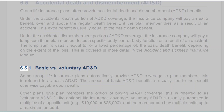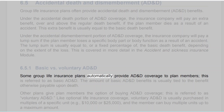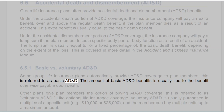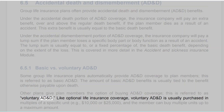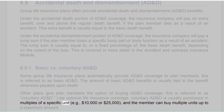6.5.1 Basic versus Voluntary AD&D. Some group life insurance plans automatically provide AD&D coverage to plan members — this is referred to as basic AD&D. The amount of basic AD&D benefits is usually tied to the benefit otherwise payable upon death. Other plans give plan members the option of buying AD&D coverage — this is referred to as voluntary AD&D. Like optional life insurance coverage, voluntary AD&D is usually purchased in multiples of a specific unit, for example $10,000 or $25,000, and the member can buy multiple units up to a maximum amount.